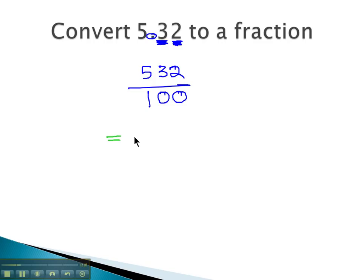Both those numbers are even, so I'm going to divide them both by 2 as we reduce. 532 divided by 2 is 266 over 100 divided by 2 is 50.